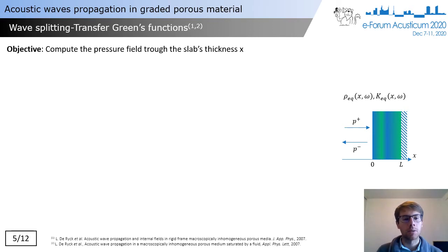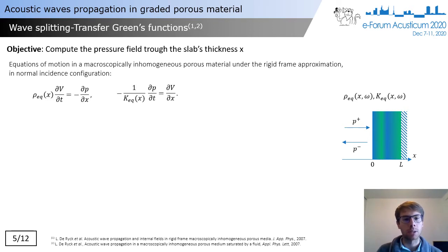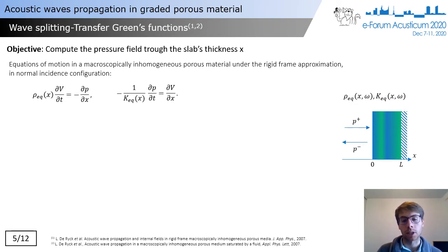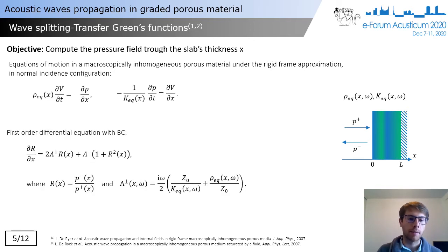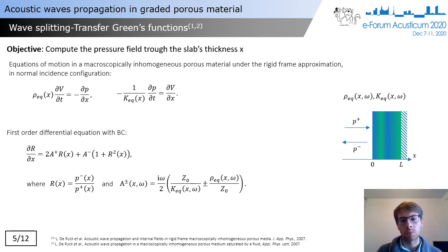Then, we need to predict the behavior of the graded porous material. To do so, we use the wave splitting transfer Green's function method described in the literature. Basically, we start with constitutive relations where the density and the bulk modulus depend on x, which is the position in the slab. With this method, we can obtain a first-order differential equation, and at the end we can obtain the reflection coefficient of the porous material.